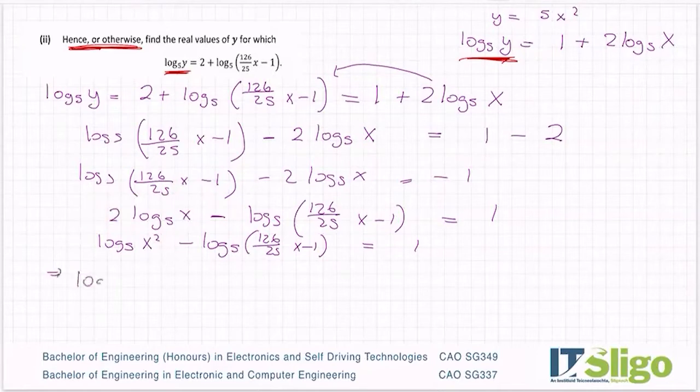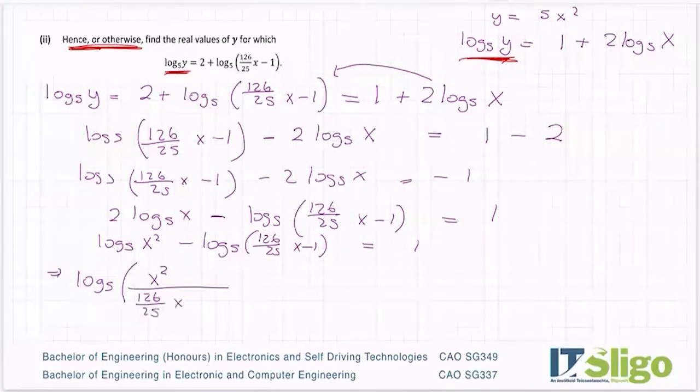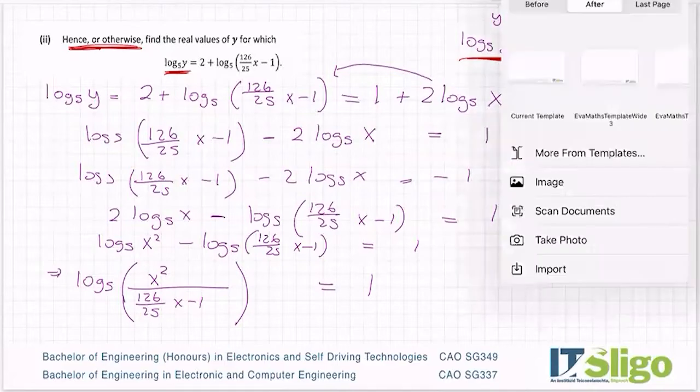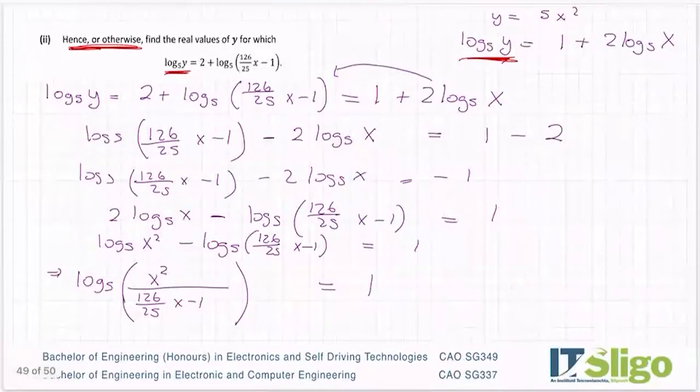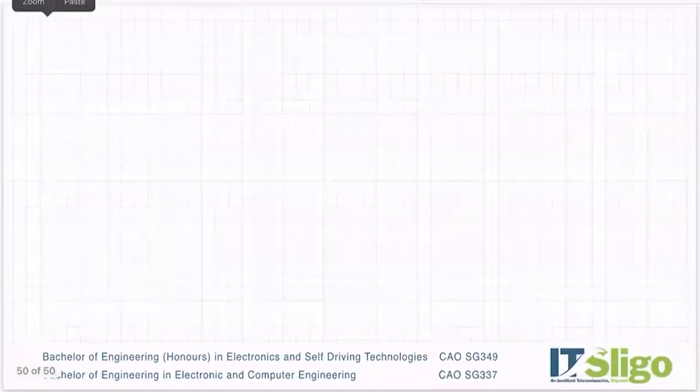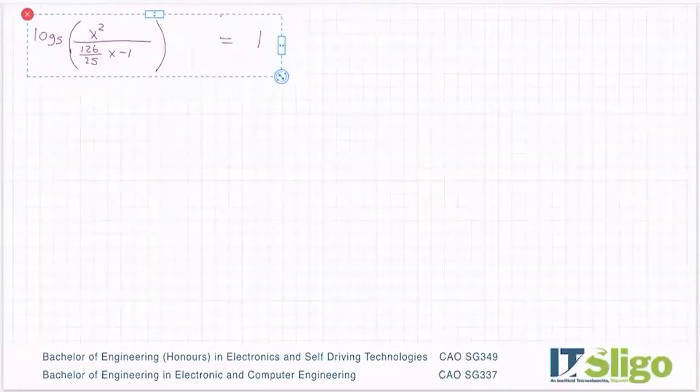So therefore this now becomes log to the base 5 of the top over the bottom. So why am I doing this? Well I have to solve for X and X is appearing a few times, so I'm just trying to bring them all together. Now I'm going to add on a new page here and we're going to continue from here. So let me copy this and let's continue from here rather than squishing it.